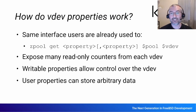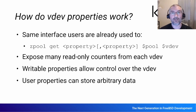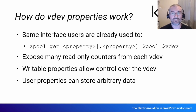So how do VDEV properties work? We use basically exactly the same interface as a pool property, except after the name of the pool you specify the name of the disk that belongs to that pool, and then you can get and set properties just like you would on the pool. There's a keyword you can use — 'all-vdevs' — so that you can get a certain property or all properties from all the VDEVs: something like 'zpool get some-property pool-name all-vdevs'.